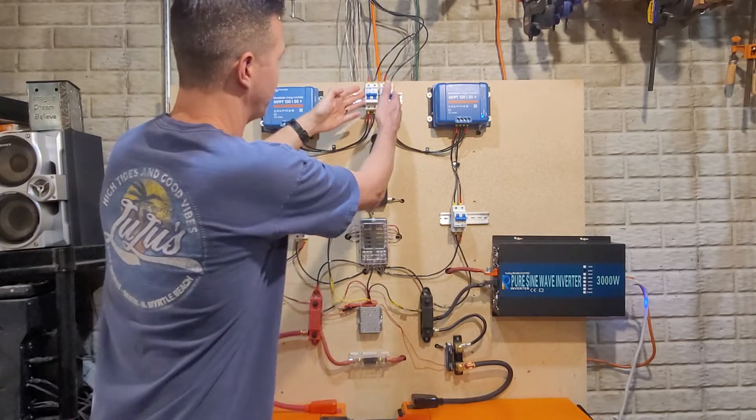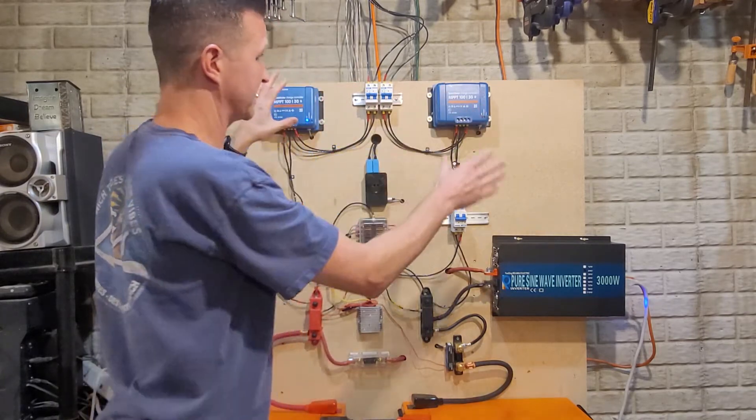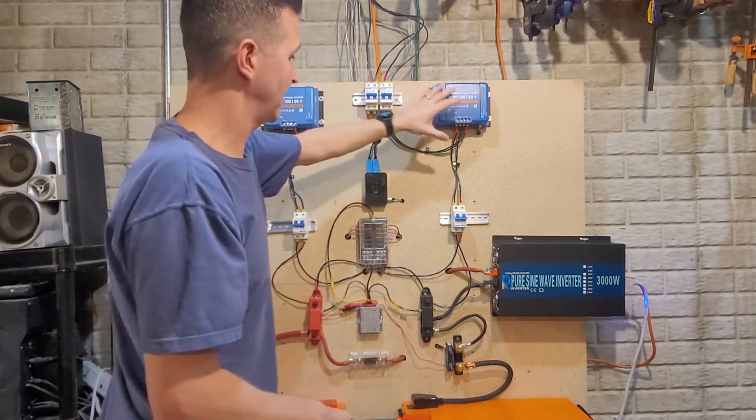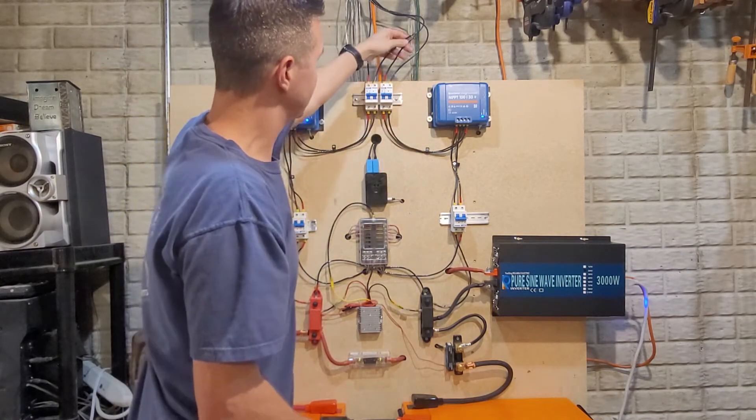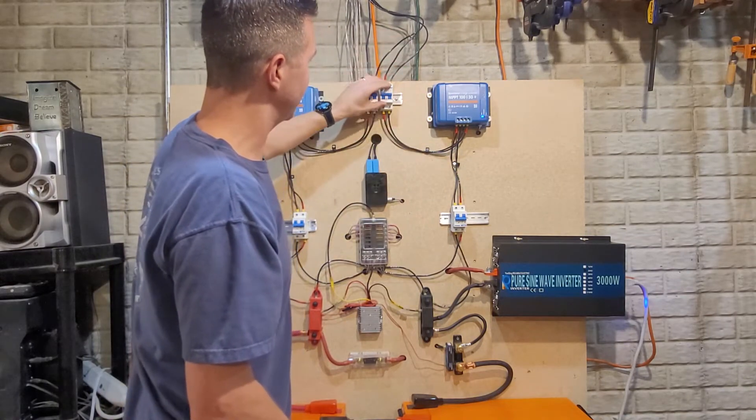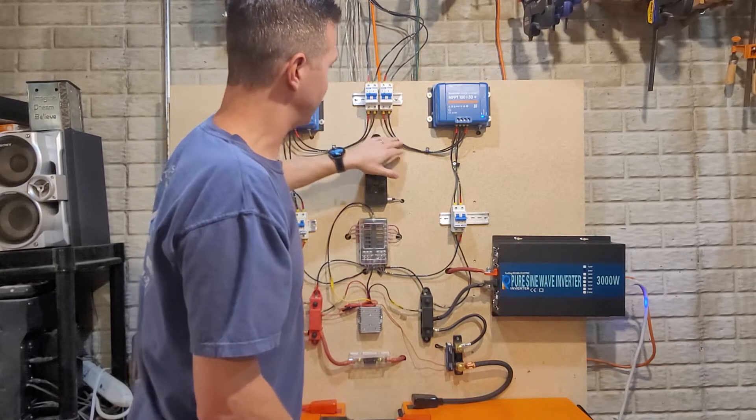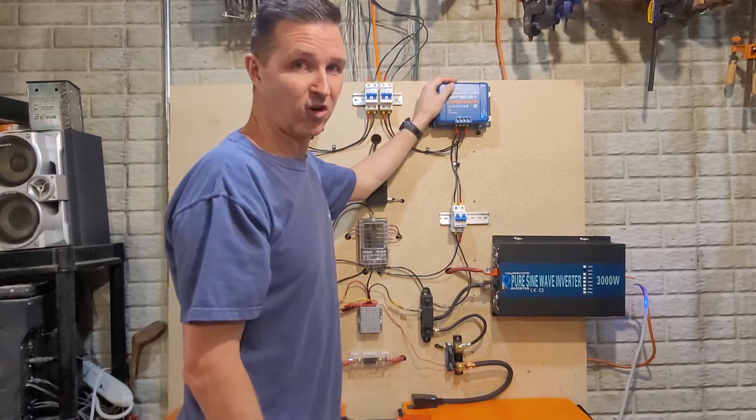From there they split off, and everything splits because I have two sets, so I'm just going to explain the one set over here. The solar panel brings electricity into this circuit breaker, and then it brings it over to this charge controller.